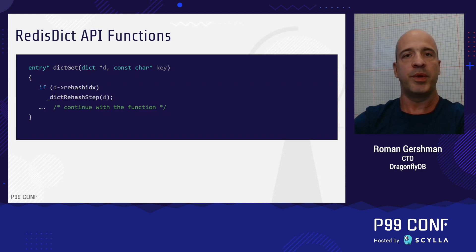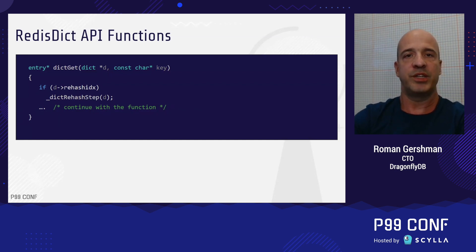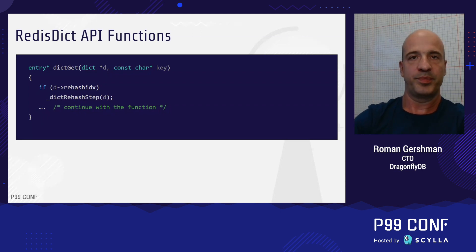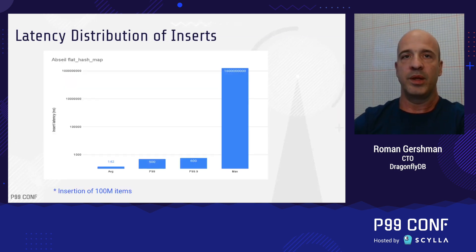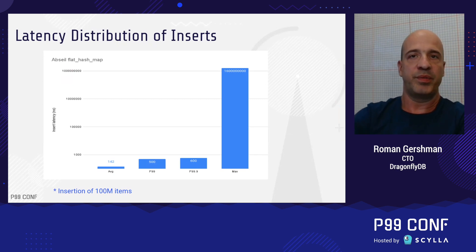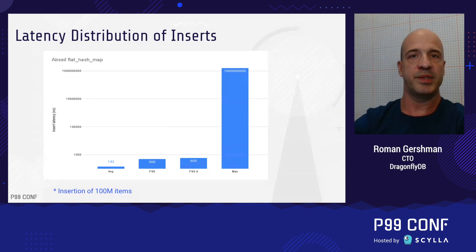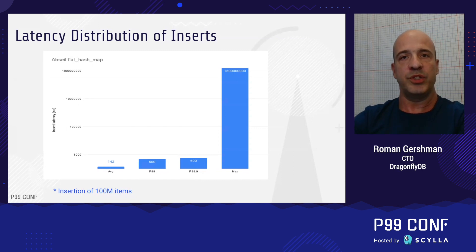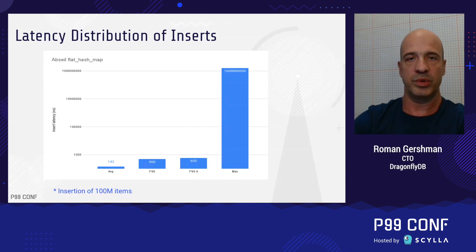I was very intrigued with this unusual modification. So I measured the insert latency on one of the fastest hash tables I knew: Abseil Flat Hash Map. This flat hash map doesn't use any incremental rehashing. Therefore, I could learn how latency looks like before any fixes. So I inserted 100 million integers into the flat hash map and measured the time that each insertion took.